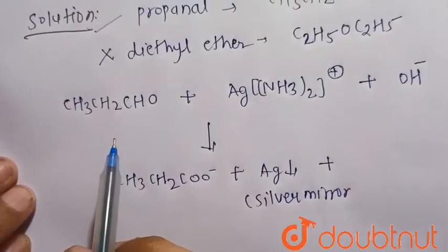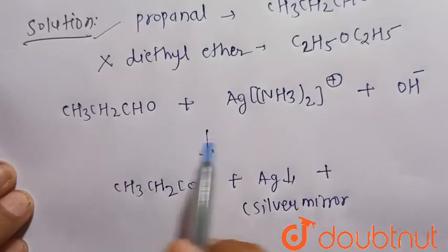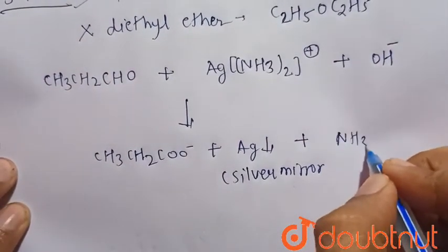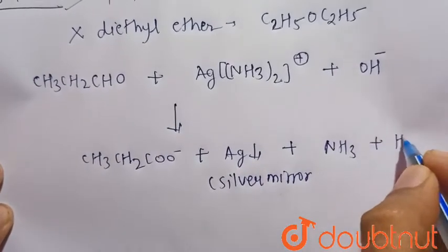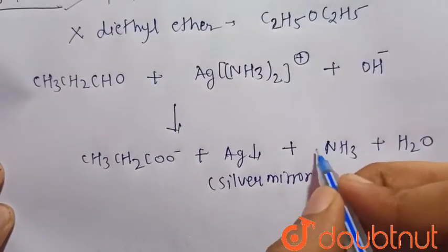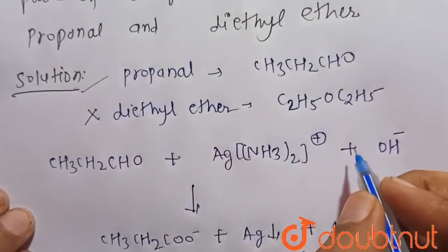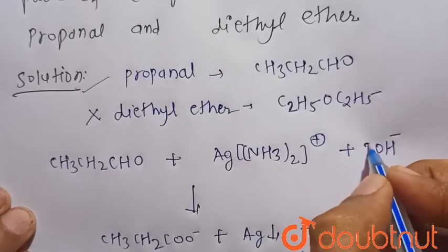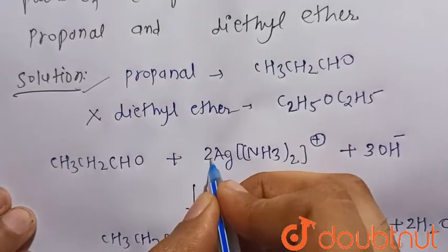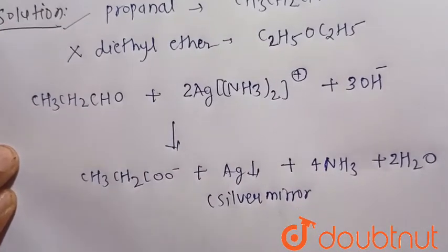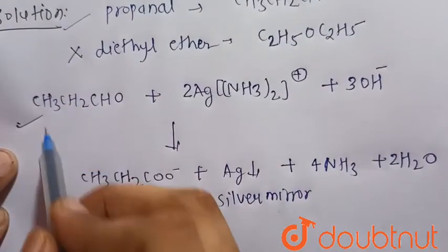So the propanol will give the silver mirror with the Tollen's reagent, and ammonia is also formed, ammonia and water. Now we have to balance this, so there should be 4, there should be 2, and there should be 3, and here should be 2. Now this is the complete balanced chemical equation of the Tollen's test of propanol.